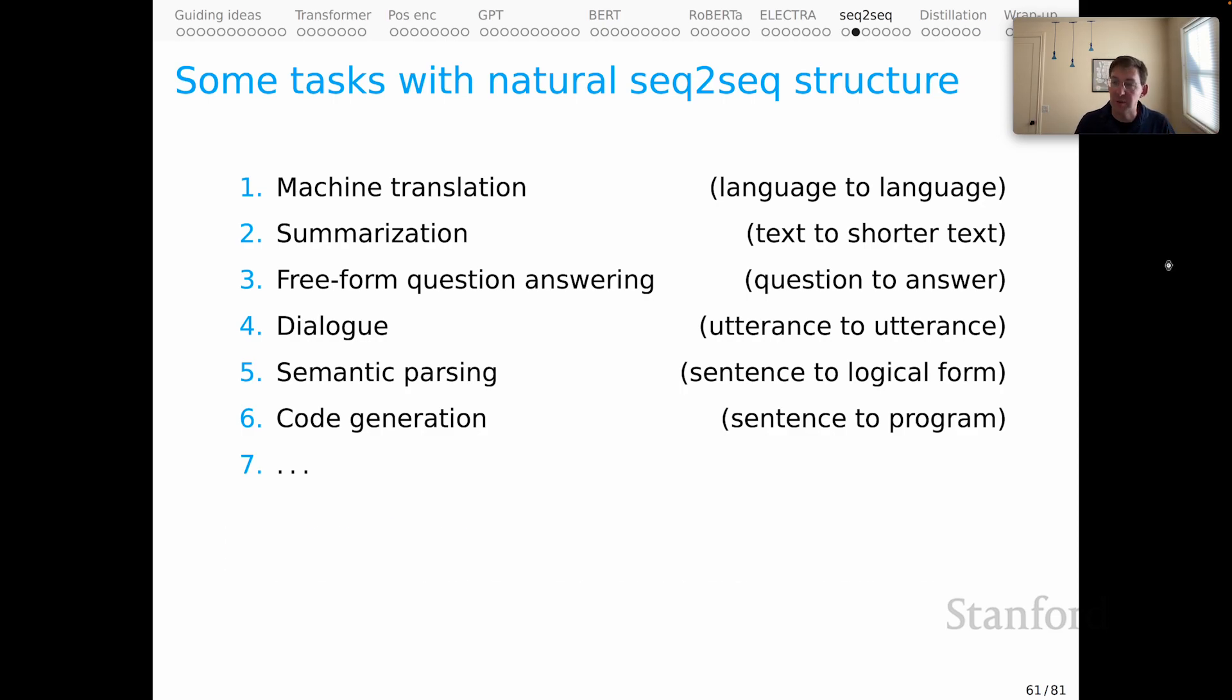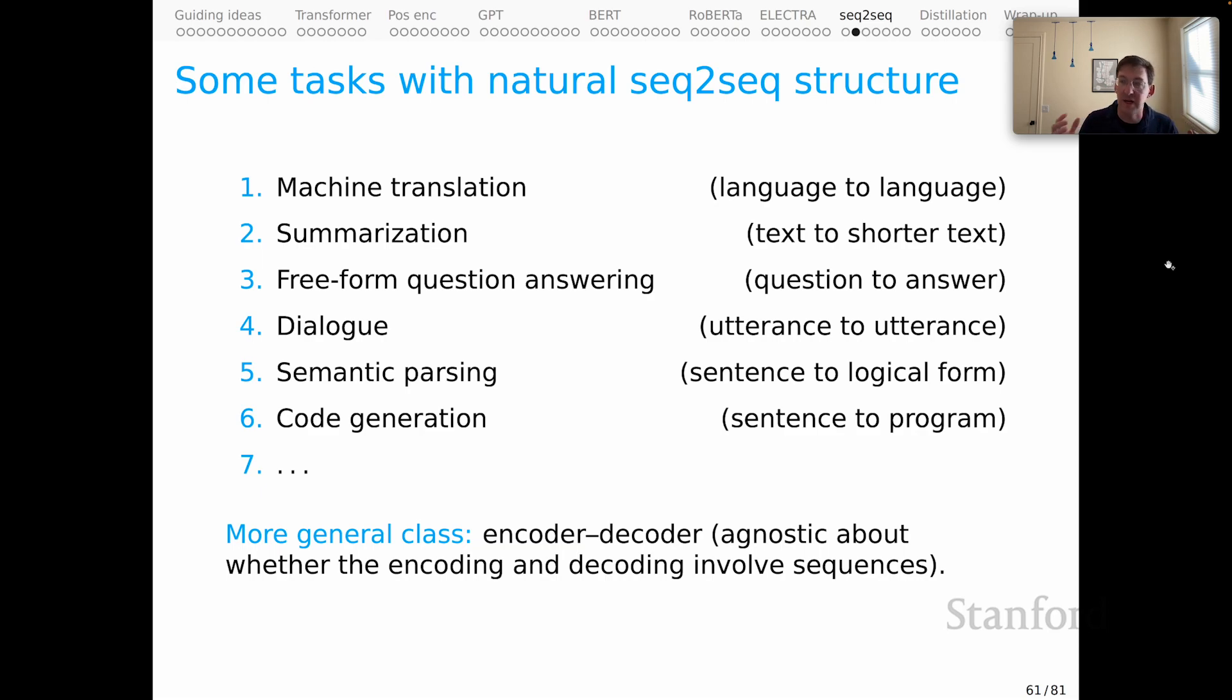And that is just a small sample of the many things that we could call seq-to-seq tasks. And even these are just special cases of the more general class of things that we might call encoder-decoder problems, which would be agnostic about whether the encoding and decoding involve sequences, they could involve images, video, speech, and so forth.